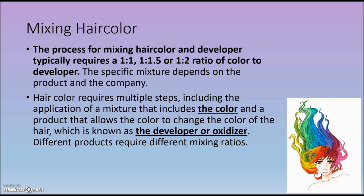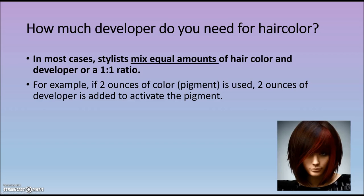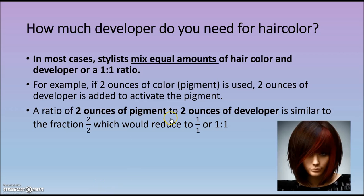Different products require different mixing ratios. The most common ratio is equal parts of hair color to developer, which means we're using a 1 to 1 ratio. For example, if 2 ounces of color or pigment is used to dye hair, then an equal part of developer — 2 ounces — is needed. This 2 ounces of pigment to 2 ounces of developer expressed as a fraction would be 2 over 2, which reduces to 1 to 1.